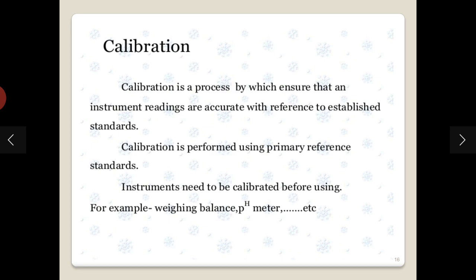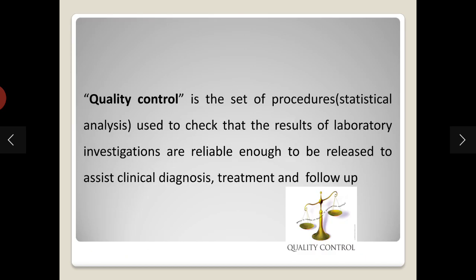Calibration is a process that ensures instrument readings are accurate with reference to established standards. It is mainly done to align the instrument and is performed using primary reference standards. Calibrators are commercially available materials used according to manufacturer instructions. The instrument should be calibrated before running patient samples.